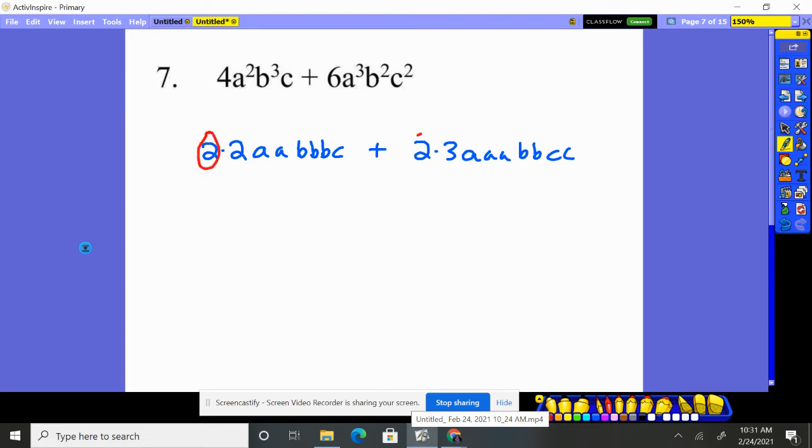A two, he has A, A, yep, I can take both those A's out. He has three B's, he only has two, so two is the most we can take out. He has just one C, so we can only take one C out. So here's what we were able to factor out.